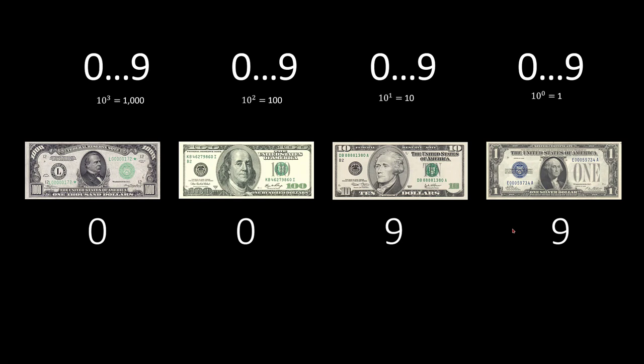Let's say we have $99, 9 tens, 9 ones. We add a dollar. What do we have? We have $100, which can be represented with this $100 bill and nothing else.